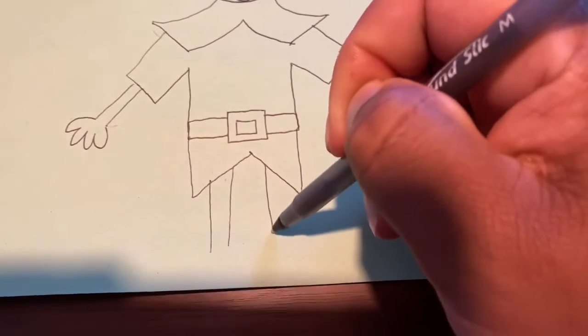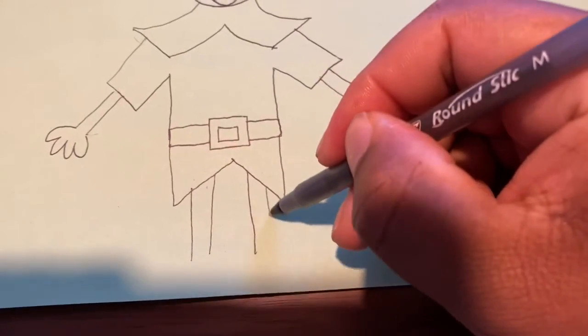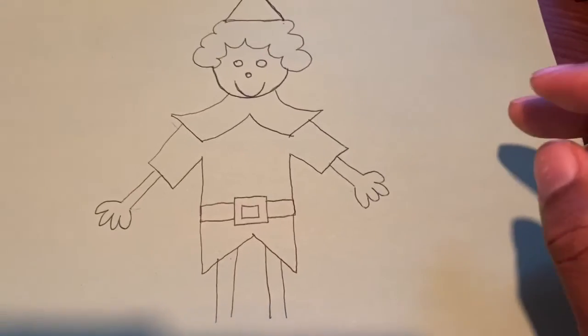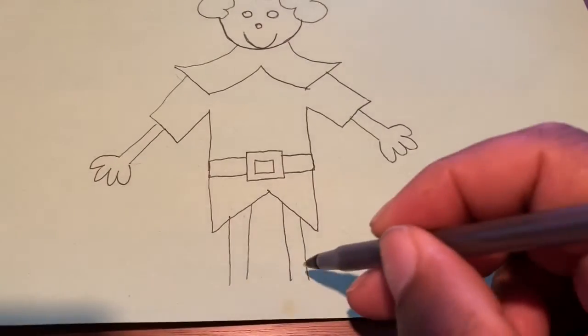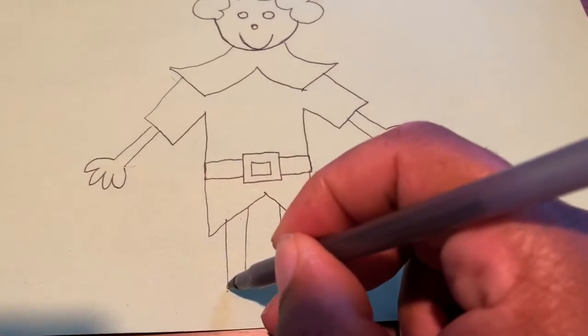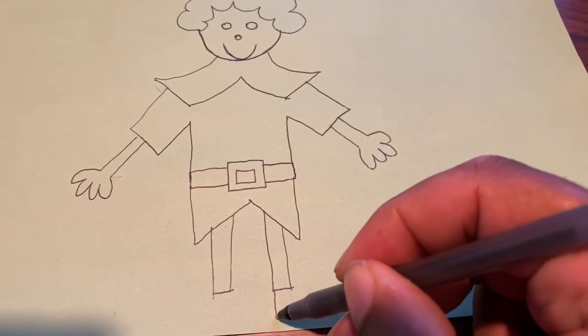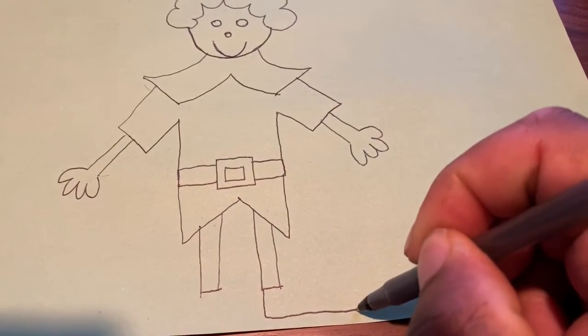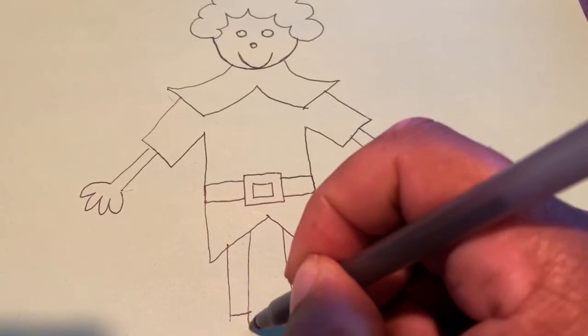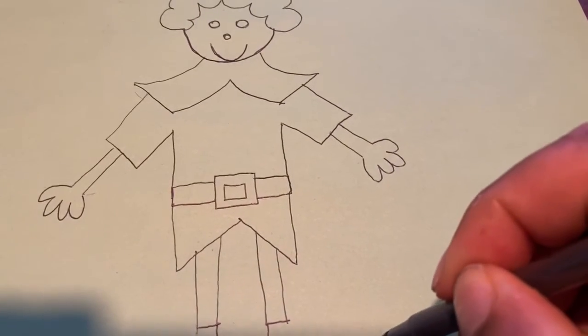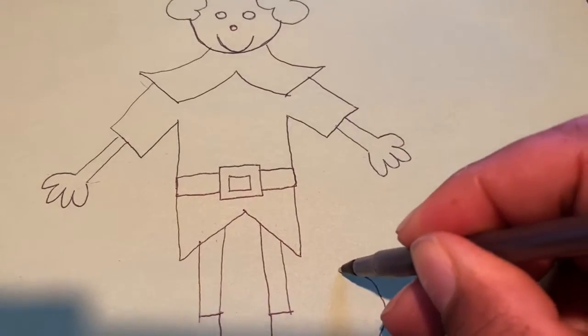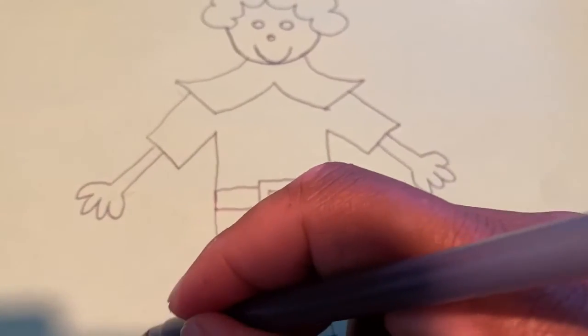Elves wear tights. All right, we're almost there. What are we missing now? What are we missing? The feet are going to be super fun. This is going to be my most fun part. So this is an L shape and then we'll do a backwards L shape. All right.